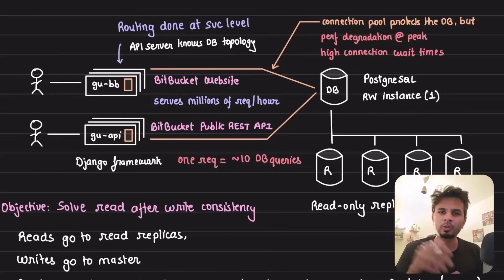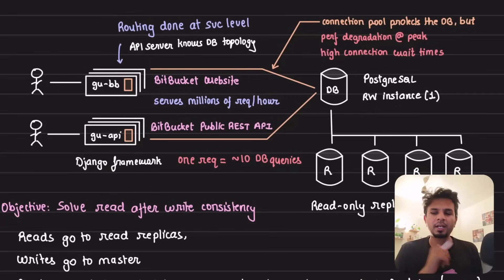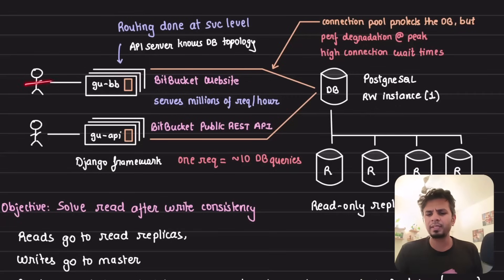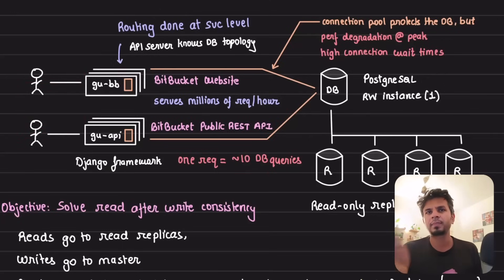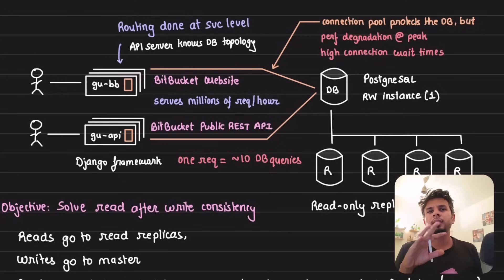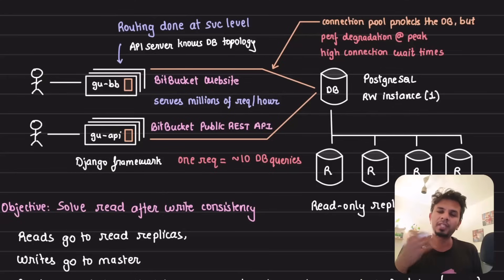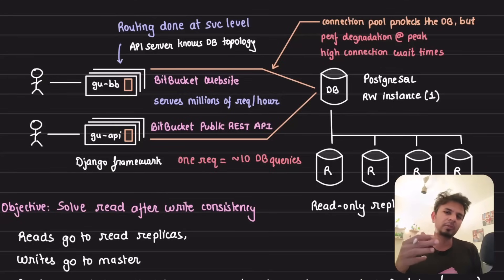One interesting thing to note is that for every request a user makes on any of the services, it typically leads to about 10 or more database queries. Because of these factors there is a lot of load on the database, which is where scalability, stability, and performance play a key role.